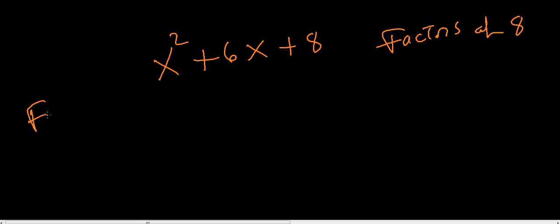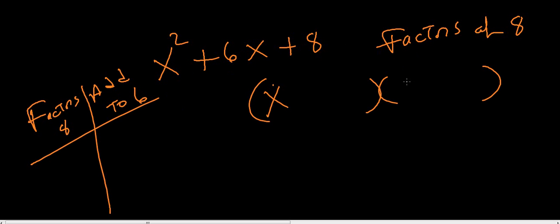Let's look at another example. Let's do x squared plus 6x plus 8. So we want factors of 8. Let me write that over here. Factors of 8 that add up to what? Add to 6. And since we've got an x squared coefficient of 1, we're going to go ahead and put an x here and an x here, because x times x is x squared, right?